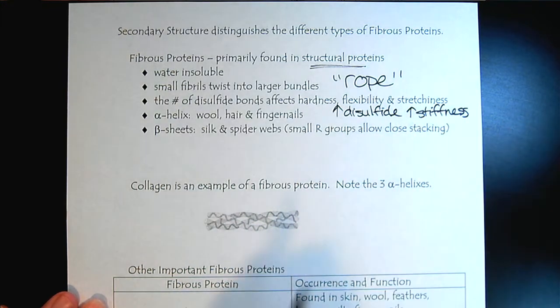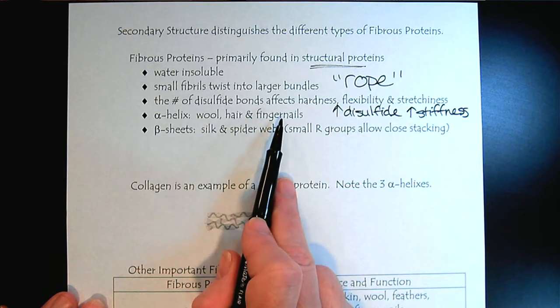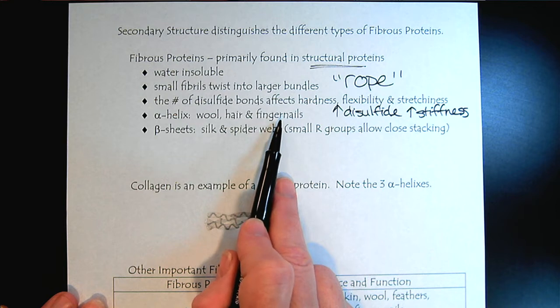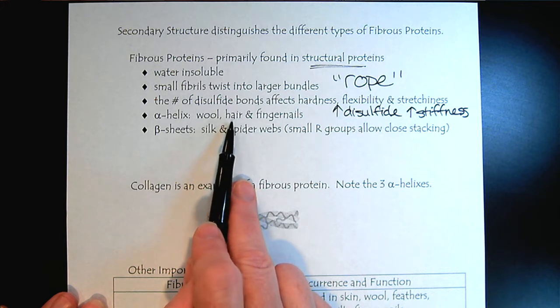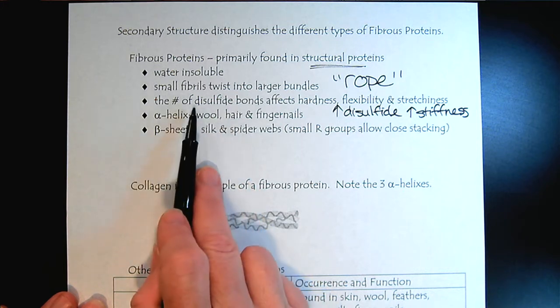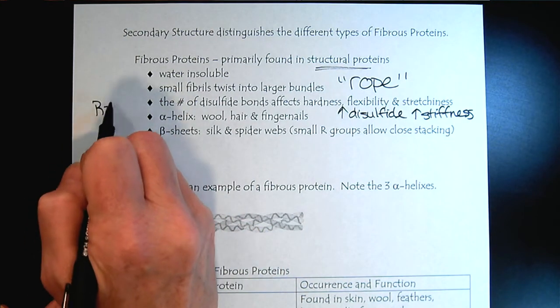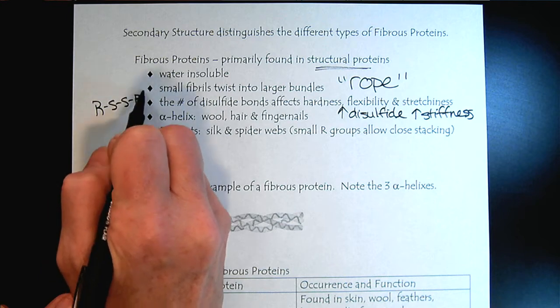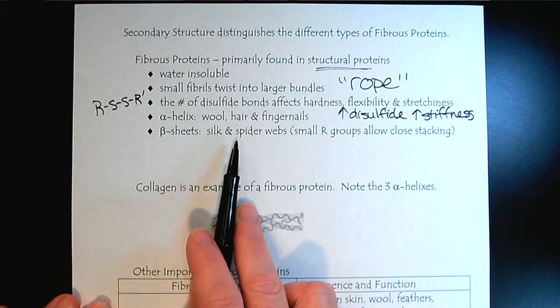If we're comparing our fingernails to our hair, we would expect to find more disulfide bridges in our fingernails than our hair. That's when we do hair straightening or perms, that's basically what we're doing, is we break the disulfide bridges, and then we reform them. Sulfur, when sulfur is bonded to organic molecules, it tends to have a kind of a stinky smell.